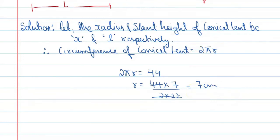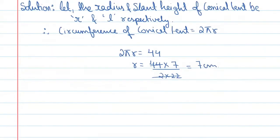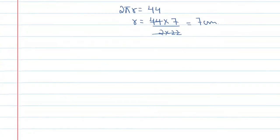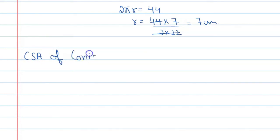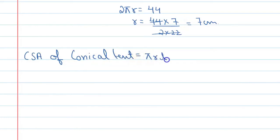Now let's talk about the curved surface area of the conical tent. The curved surface area of the conical tent is equal to πrl, where l is the slant height. So we need to find the slant height first.